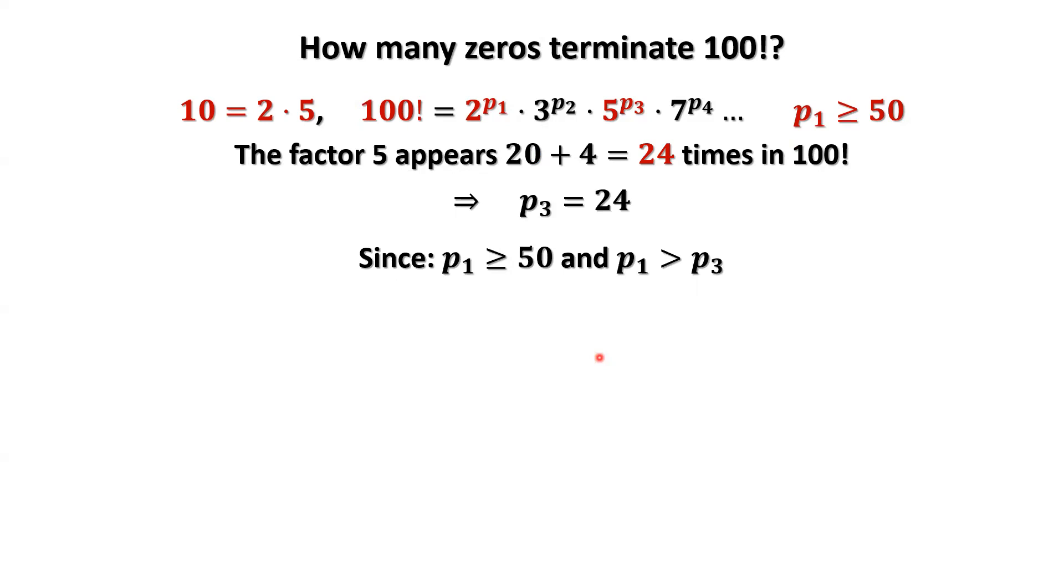One factor of 2 and one factor of 5 make 1 ten. Therefore, 100 factorial is divisible by 10 as many times as factor 5 appears.